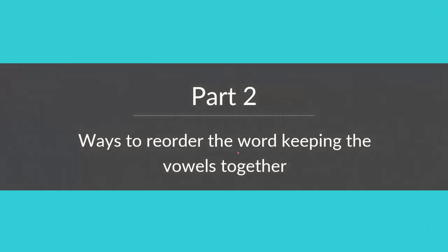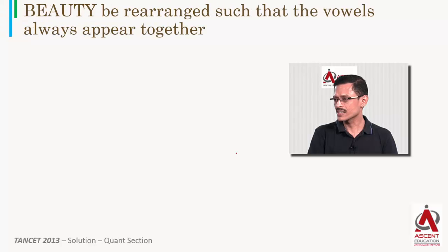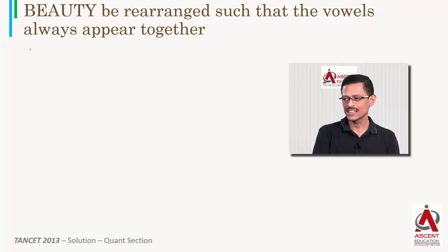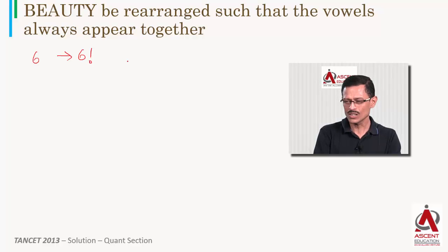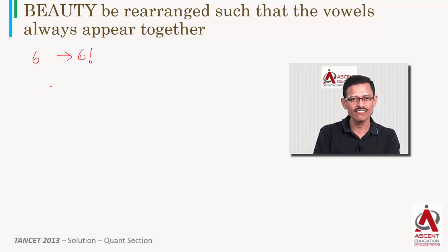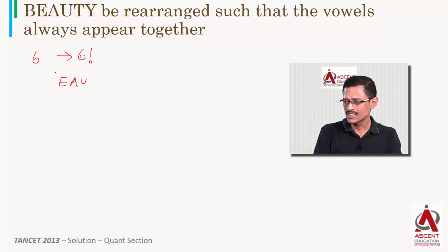Now let's apply this theory to the question — part 2. The word is BEAUTY. How many reorderings are possible such that the vowels appear together? BEAUTY has six letters, so without any constraint they can be arranged in 6 factorial ways. But that is not what we want. In BEAUTY, the vowels are E, A, and U — three vowels.